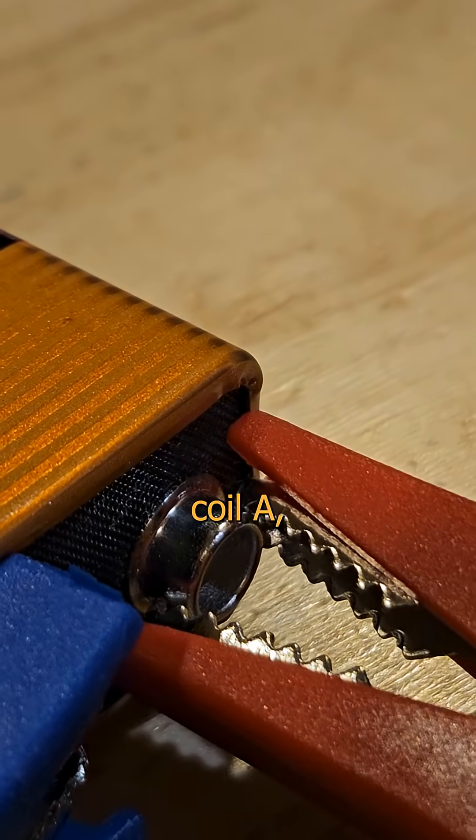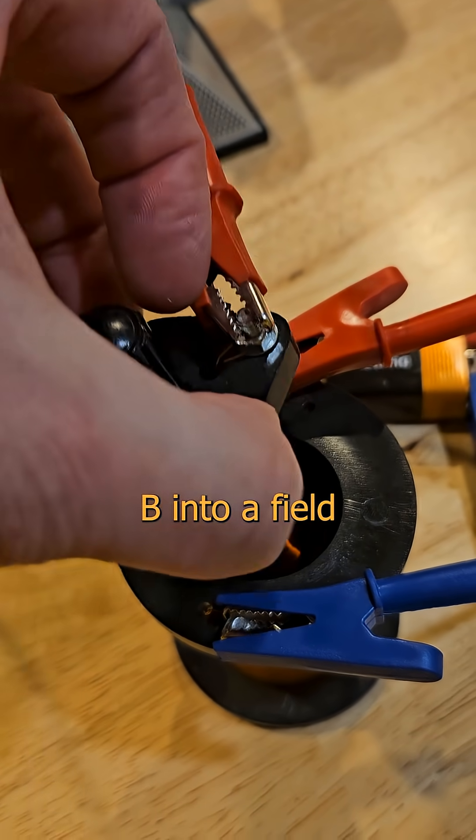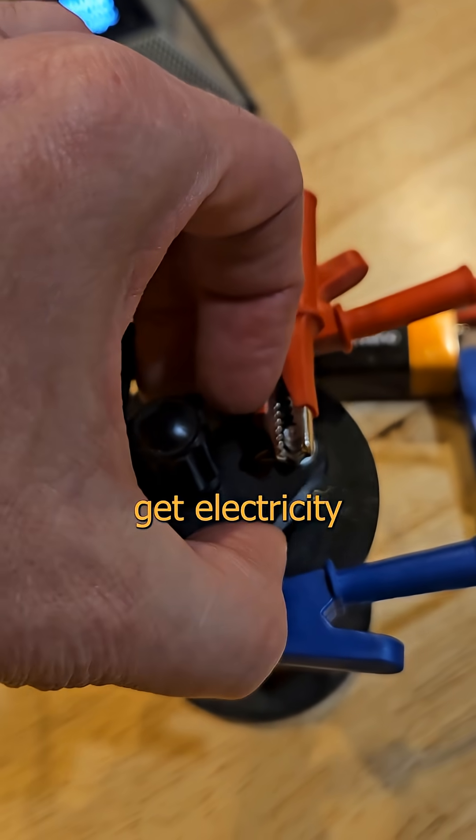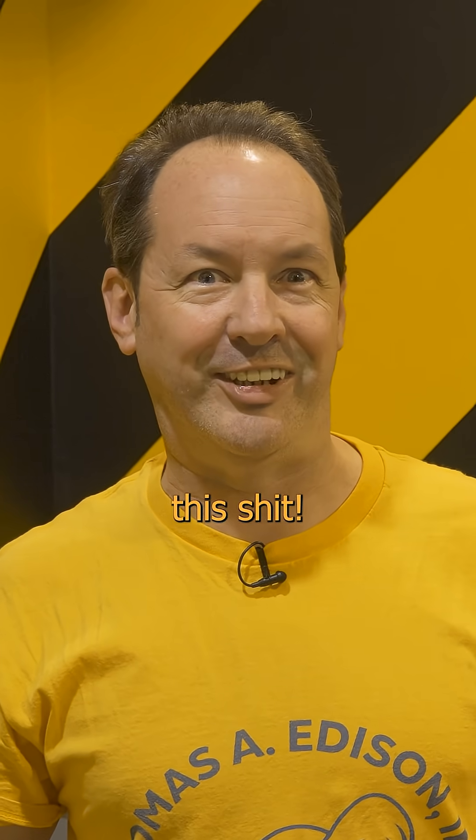if we put electricity into coil A, and put coil B into a field from coil A, can we get electricity out of coil B? Let's science this.